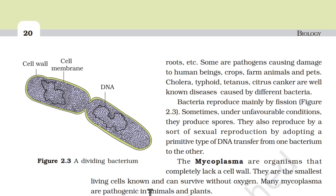Bacteria reproduce mainly by fission. Sometimes under unfavorable conditions, they produce spores. They also reproduce by a sort of sexual reproduction by adopting a primitive type of DNA transfer from one bacterium to the other. Mycoplasma are organisms that completely lack a cell wall. They are the smallest living cells known and can survive without oxygen. Many mycoplasma are pathogenic in animals and plants.